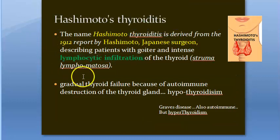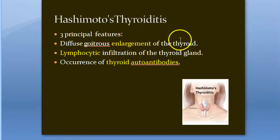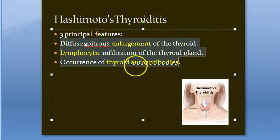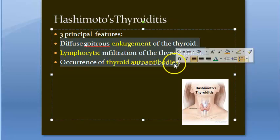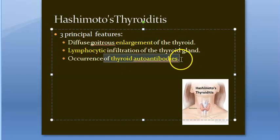The thyroid tissue will start looking like a lymph node. This will usually be characterized by hypothyroidism and there will be destruction of thyroid tissue. There are three principal features: enlargement of the thyroid, lymphocytic infiltration, and thyroid autoantibodies can be detected.